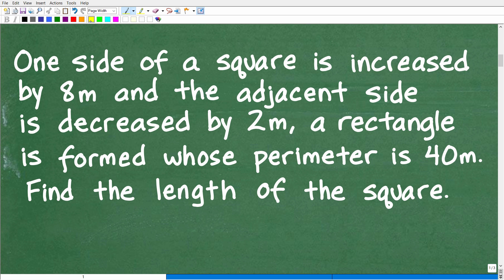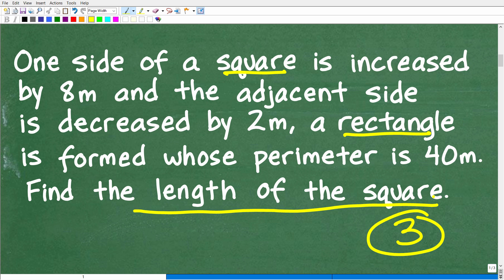All right, so first things first. We have this lovely problem. Always use the rule of three, which is read the problem at least three times before you do anything. Now, of course, I've already read the problem a couple of times here. But if you don't understand some problem that you're dealing with, raise your hand if you're a student, ask your teacher, do whatever research, look up a word. You've got to be clear on what the problem is, the information in the problem, and what the question is. Right, so here we have a square. It's turning into a rectangle because we're increasing and decreasing the sides, and we want to find the length of the original square.